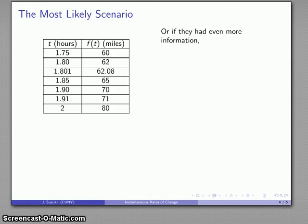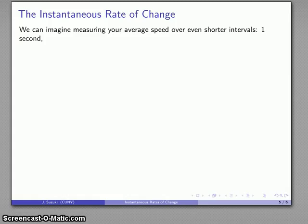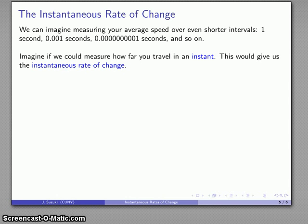We can find even more information. Suppose I know my distance at t equals 1.801 hours and at t equals 1.8 hours — two times very close together. My average speed over that short interval is about 80 miles per hour, and the interval corresponds to 0.001 hours, about 3.6 seconds. I can imagine measuring average speed over even shorter intervals: one second, a thousandth of a second, a tenth of a billionth of a second, using shorter and shorter intervals.